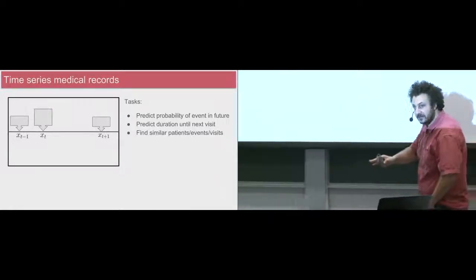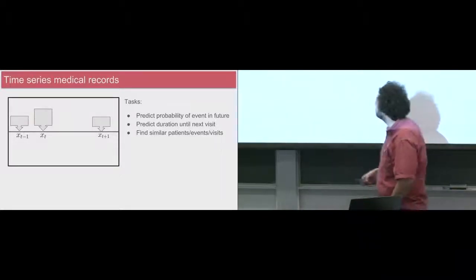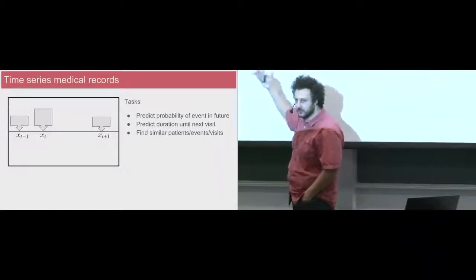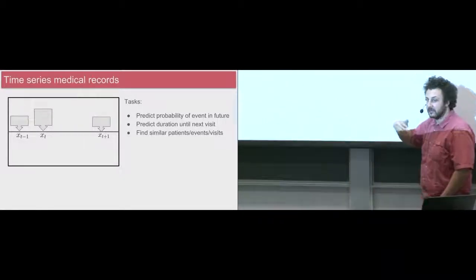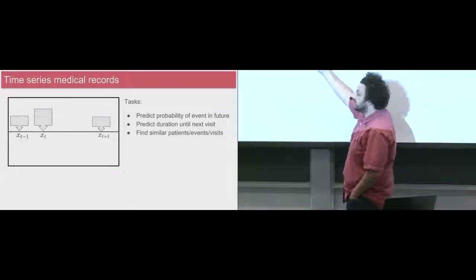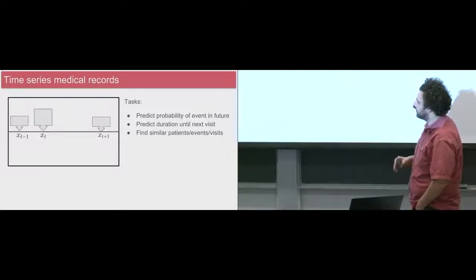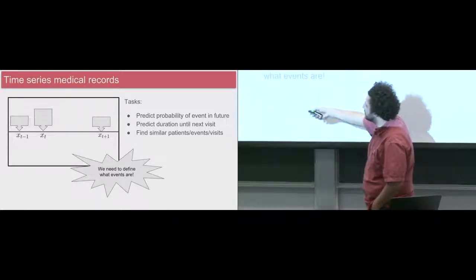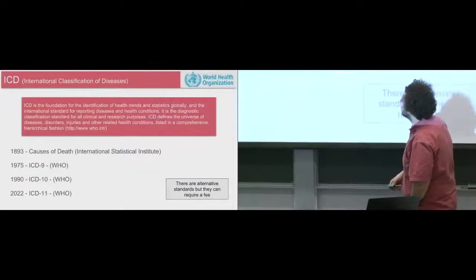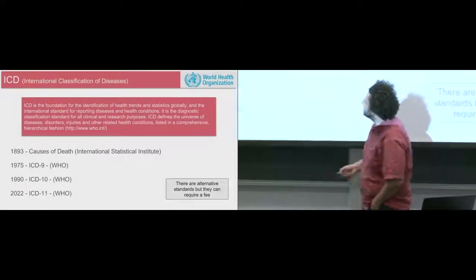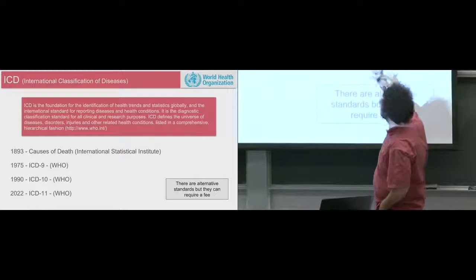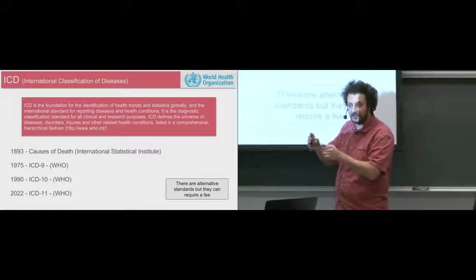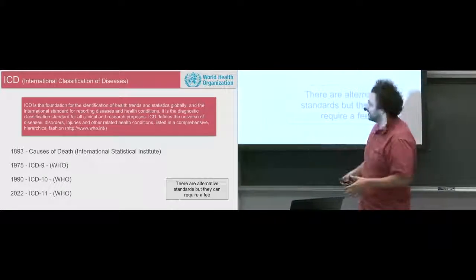We can also predict the amount of time before the next visit — is it six months, two years, four days? This comes into planning for your emergency room if you know a bunch of people are going to come in soon. If you have a model like this, you can find similar patients whose next visit is likely coming at a similar time. In order to work with this from a computer science point of view, we need to code everything in some sort of encoding — we need to define what events are, and fill these boxes with something.